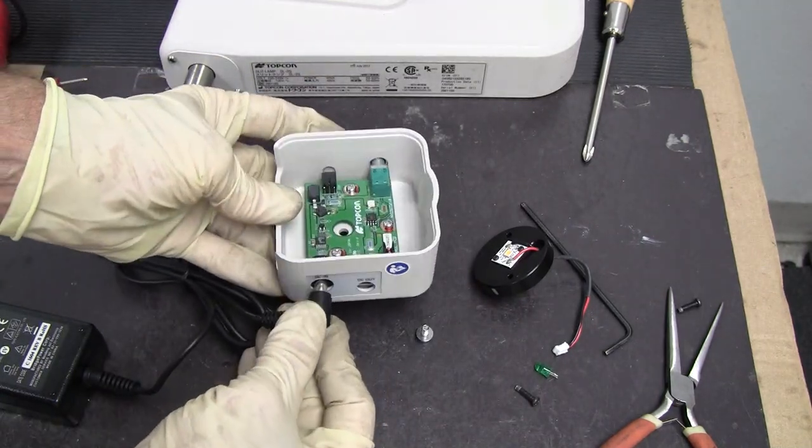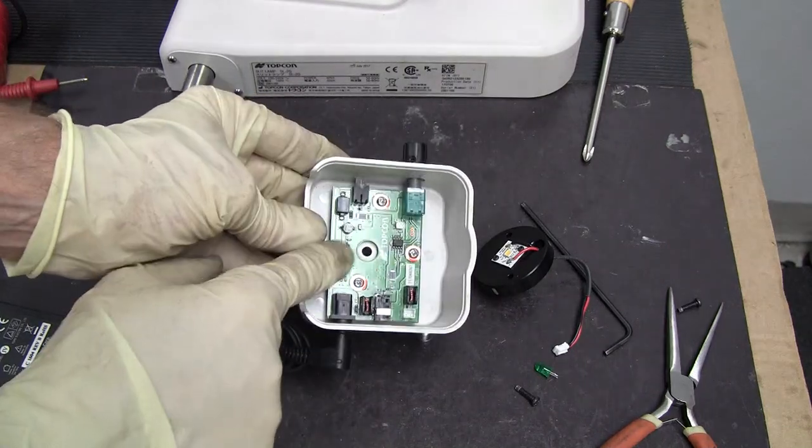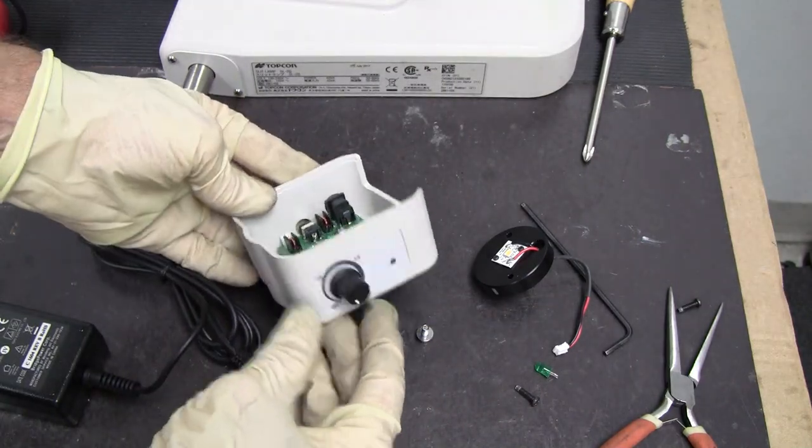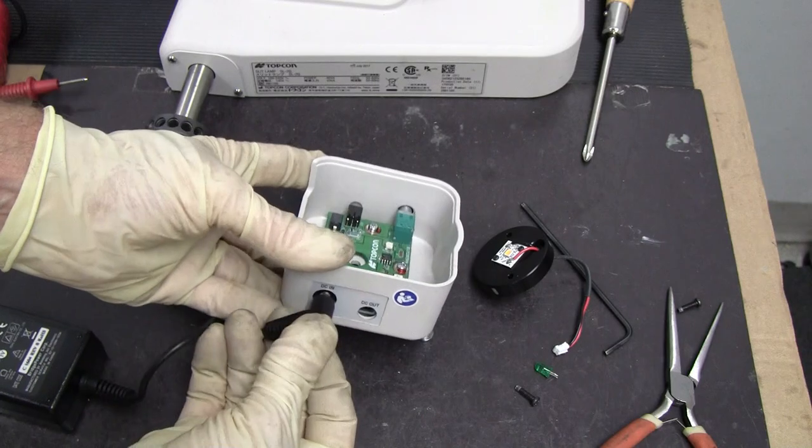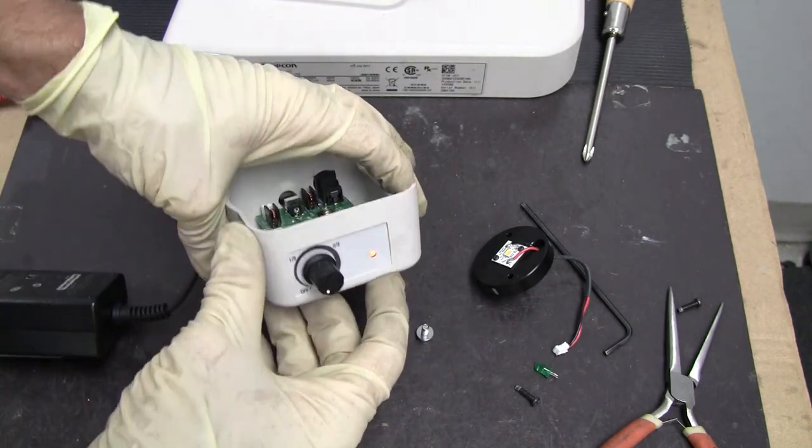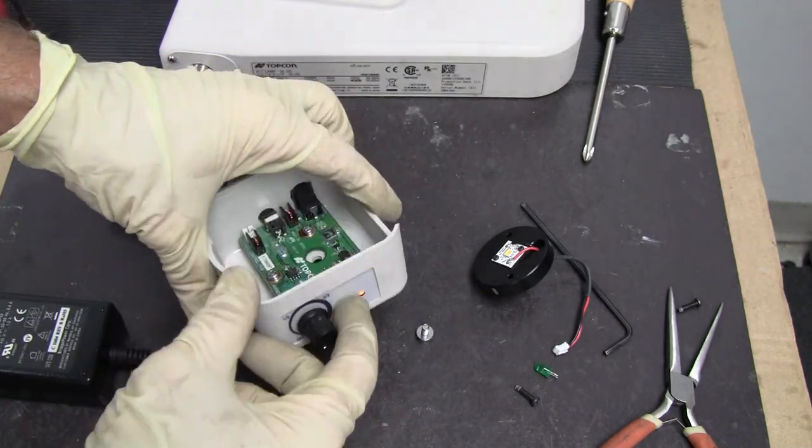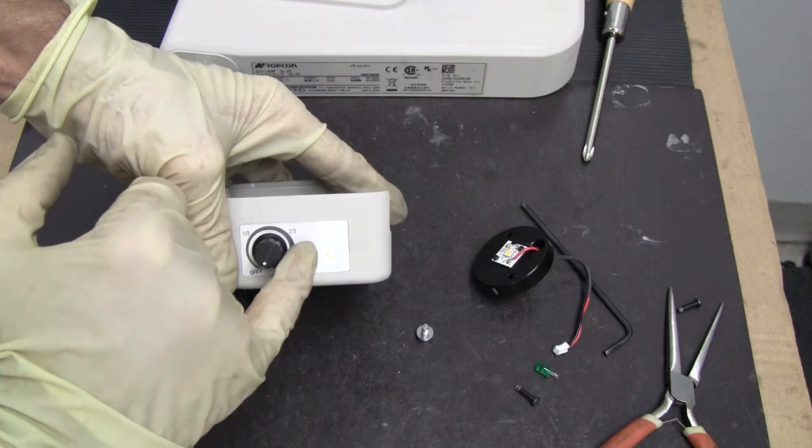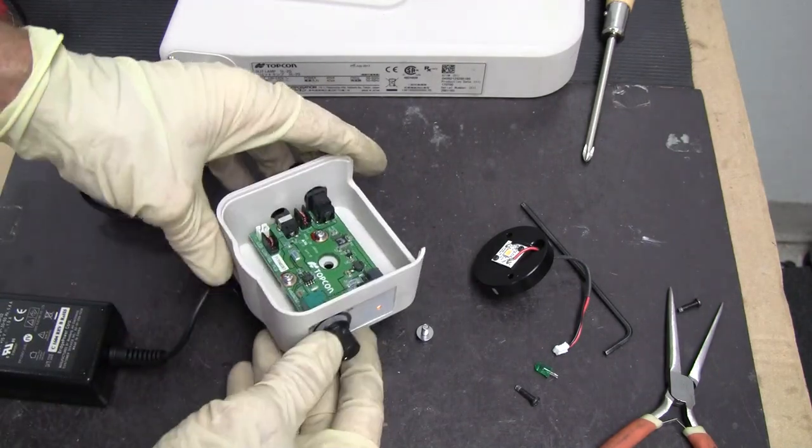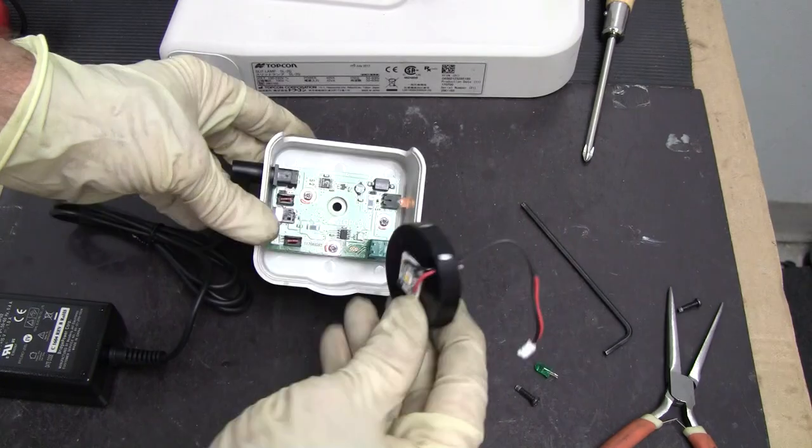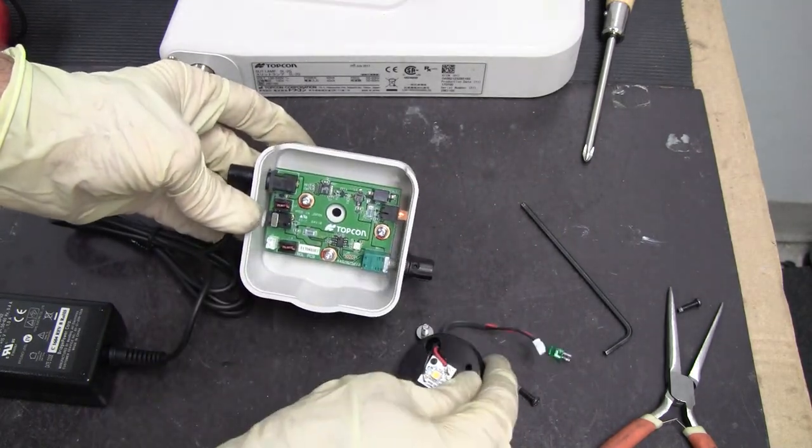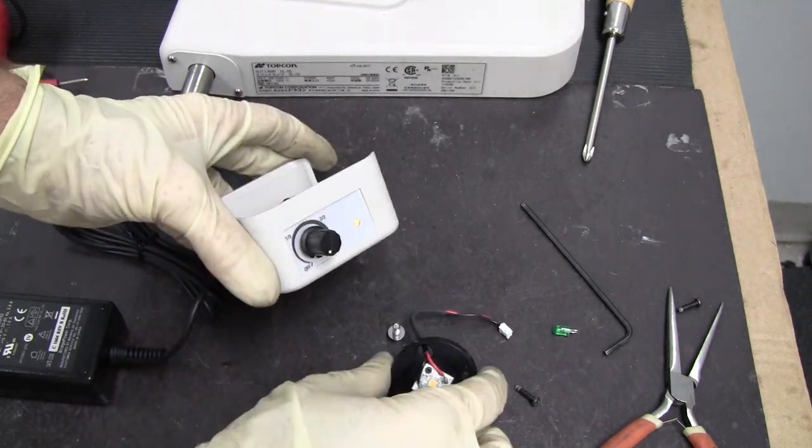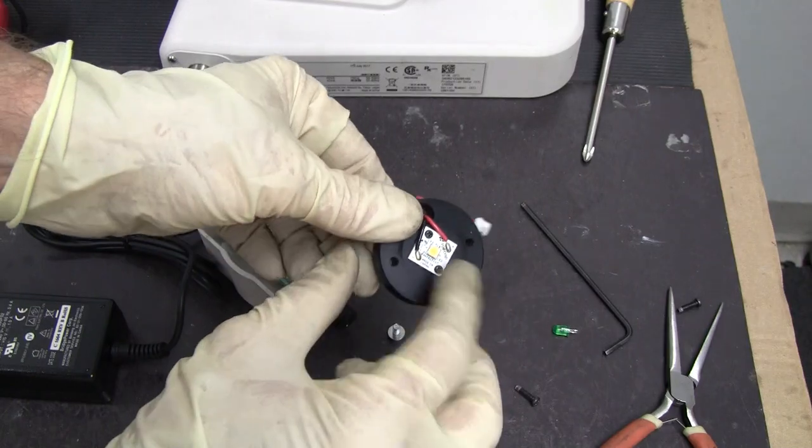When you apply power to this PCB board, the external LED indicator should turn amber, yellow. That's regardless of whether you have the LED plugged in or not. So if you're not getting any light, it doesn't matter if this is bad or not.